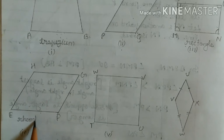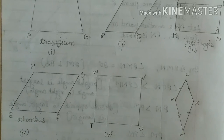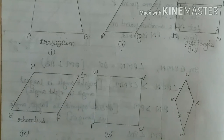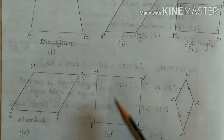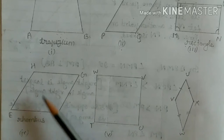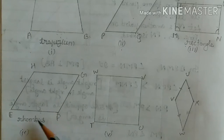What do we say? Rhombus. A parallelogram where all sides are equal is called a rhombus. Now here you see, this is rhombus — all sides are equal.